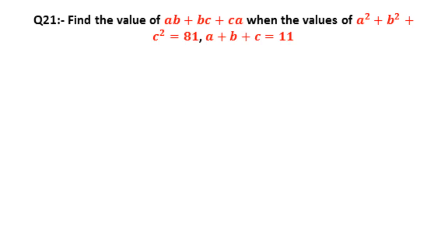We are going to solve it step by step. Let's see its solution. We have to find the value of ab + bc + ca, so we are given in the question that a + b + c = 11.